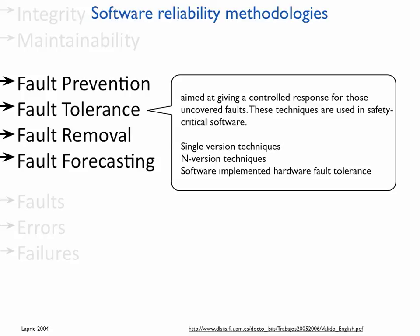I also want to mention software-implemented hardware fault tolerance. Hardware can also be faulty — in memory and CPU we can have bit flips caused by cosmic radiation, where a bit flips from zero to one or vice versa. We can tolerate this using specific software: reading variables several times, saving them to different memory locations, running functions multiple times and comparing outputs. There are also much more advanced methods.